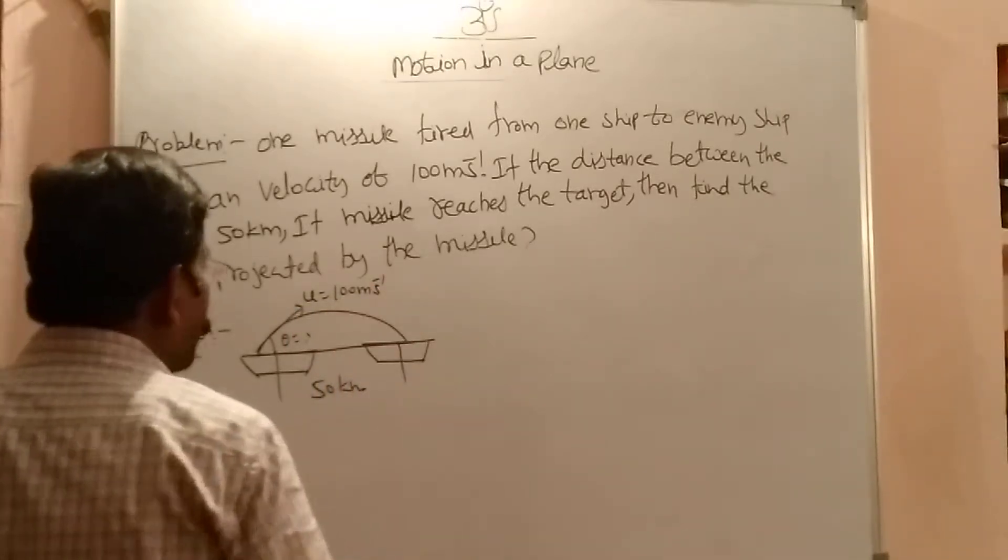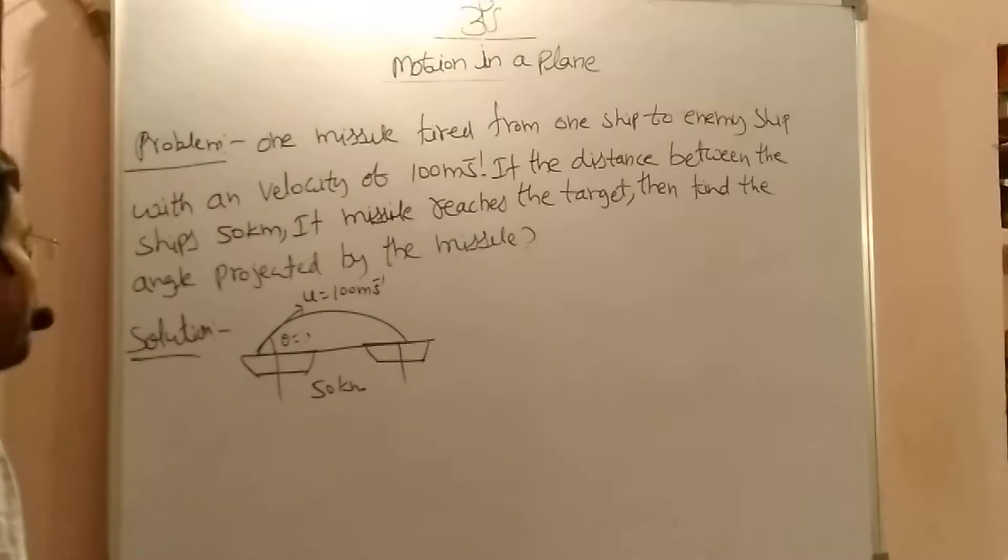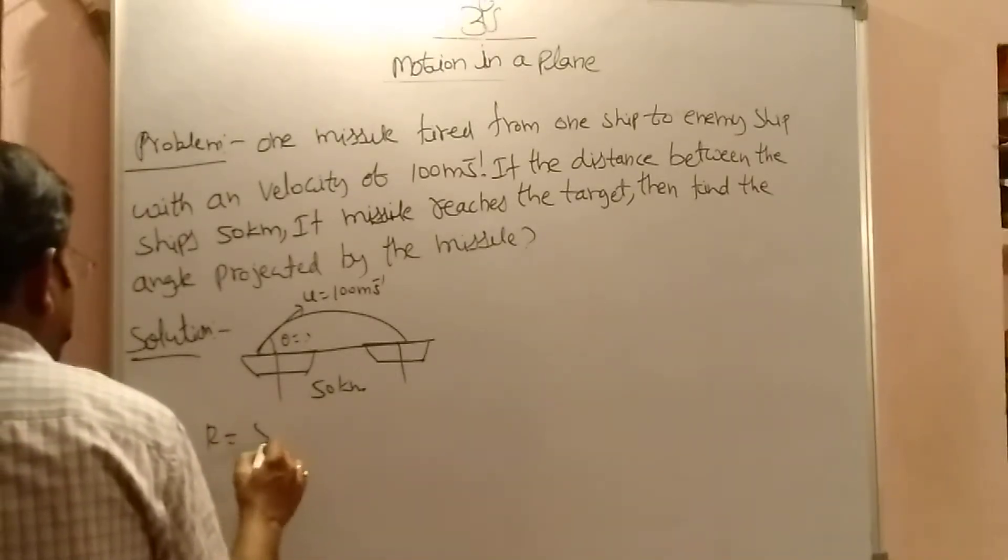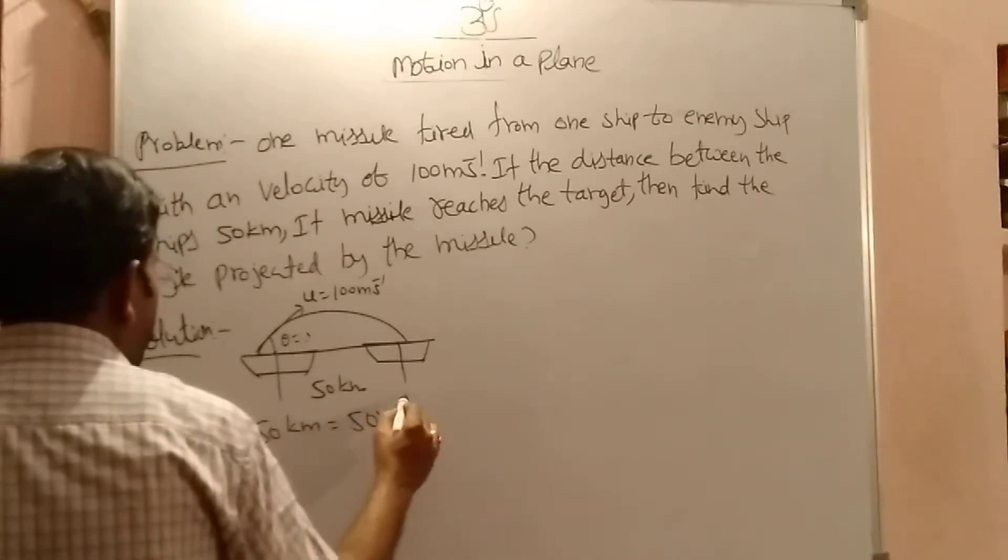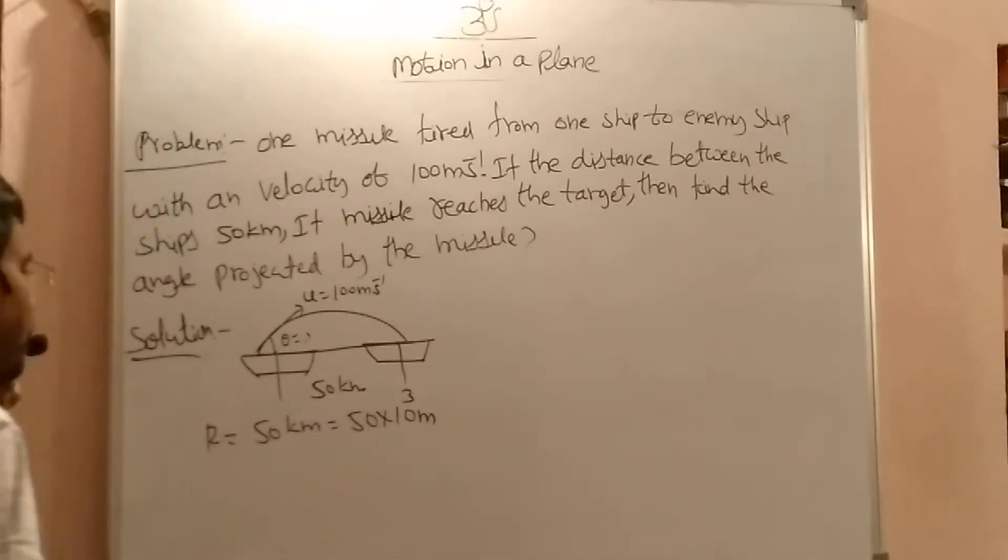So this is like a range. Now what is the problem for range? Here R equal to 50 km. You convert into meters. So 50 into 10 power 3 meters. Range completed.